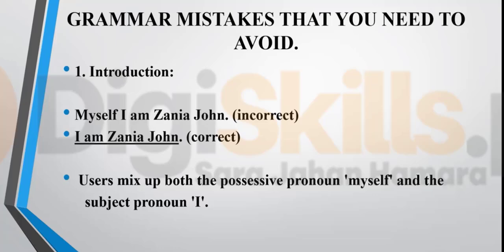When you're giving an introduction, a common expression people use is 'Myself, I am Zania John.' Myself is an incorrect expression — you don't use that. You simply say 'I am Zania John' or 'I am Sidra Raheel.' You can also say 'My name is Sidra Raheel,' but preferably just say 'I am' followed by your name. Myself is a possessive pronoun which people incorrectly mix with subject pronouns.